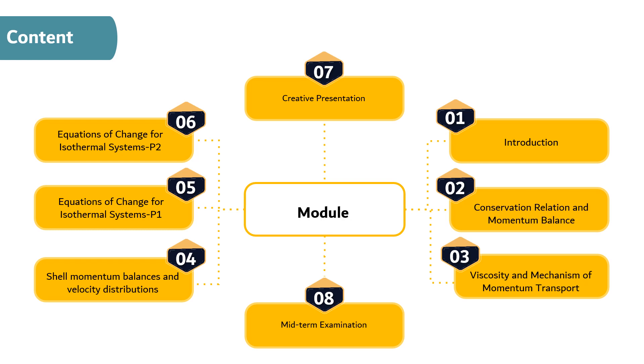The content of this course consists of 16 modules. The first module is Introduction. The second module is Conservation, Relation and Momentum Balance. The third module is Viscosity and Mechanism of Momentum Transport. The fourth module is Shell Momentum Balances and Velocity Distribution. The fifth module is Equation of Change for Isothermal System Part 1. The sixth module is Equation of Change for Isothermal Systems Part 2. Followed by Creative Presentation and Midterm Examination.